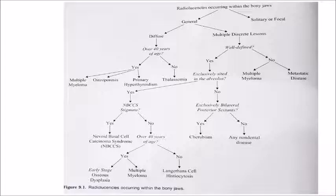Multiple discrete lesions can be well-defined. If well-defined and in the alveolus region, it can be cherubism — which mainly affects the posterior sextants. If ill-defined, it can be multiple myeloma or a metastatic disease.